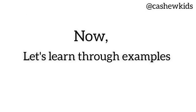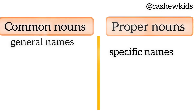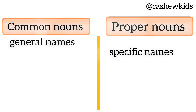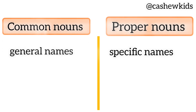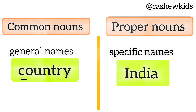Now, let's learn through examples. Common nouns are general names — they do not begin with a capital letter. Like the word 'country.' Proper nouns are specific names. Like the country name India. Proper nouns start with a capital letter.